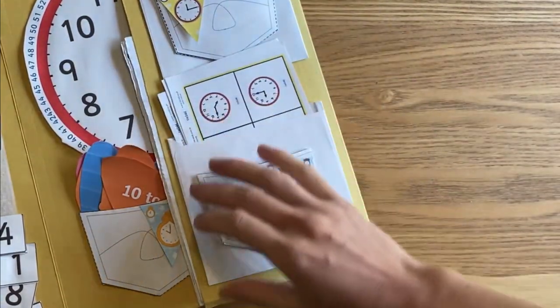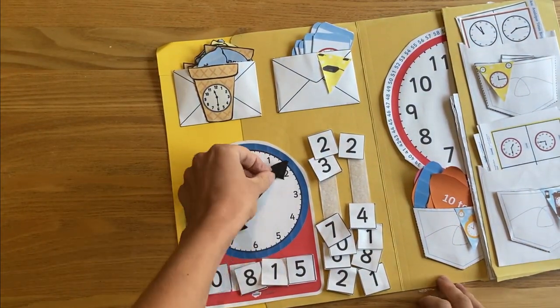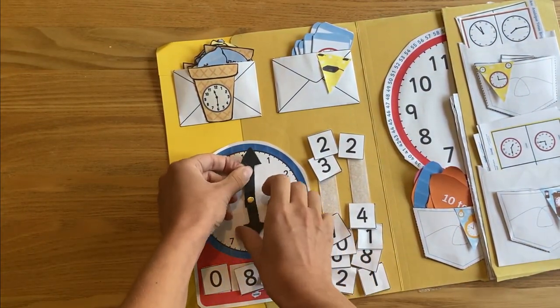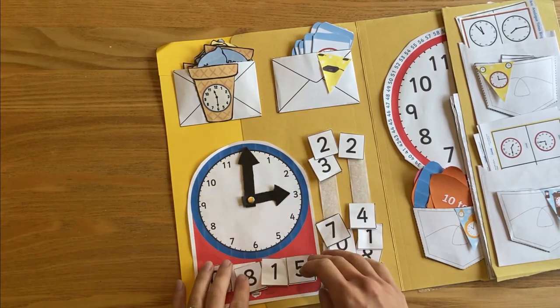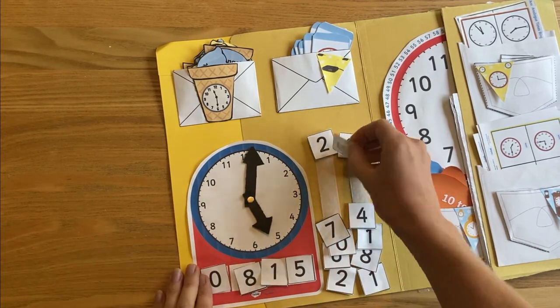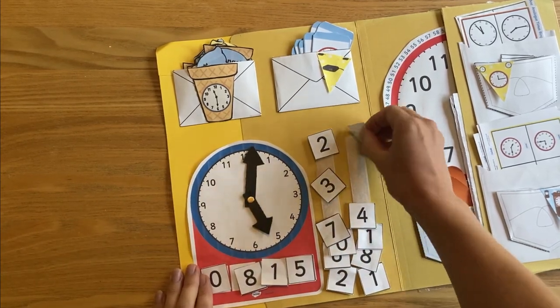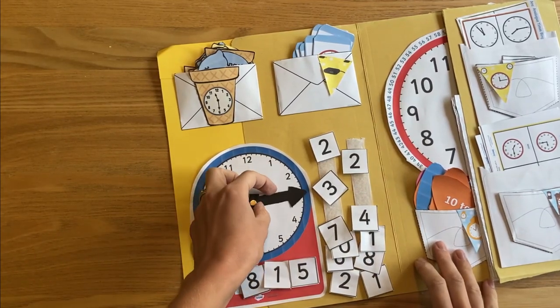Over here we've got a big clock which is hands-on, so we can move around the hands and put different times on and then change what numbers we're putting down to get the right time. We've used velcro to stick all these numbers down so we can play with that.